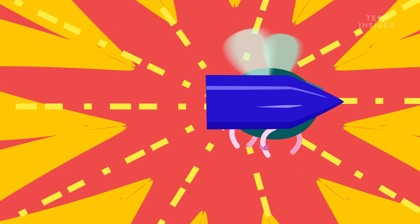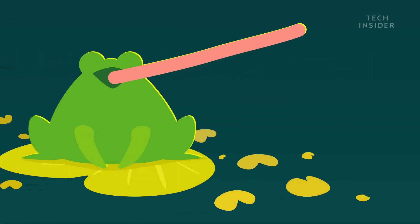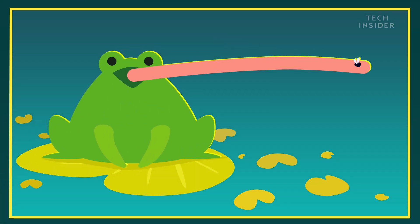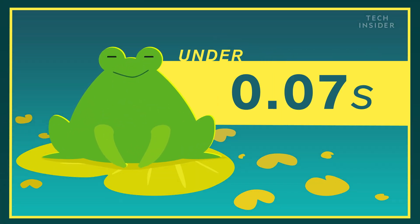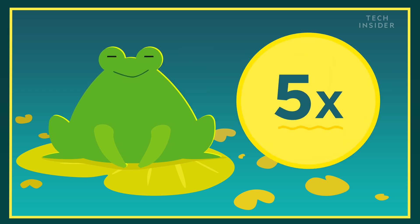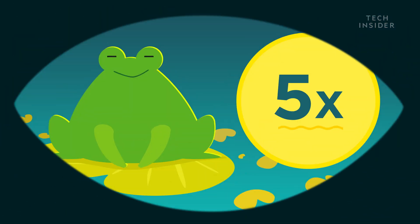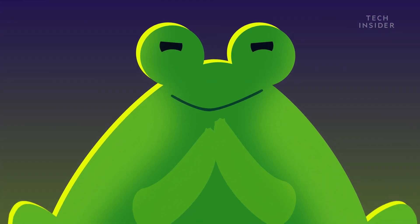Bam! Before you can blink, it's all over. Researchers found that frogs can snatch their prey in under 0.07 seconds, five times faster than you can blink. But speed isn't a frog's only weapon.